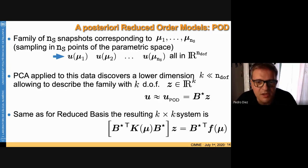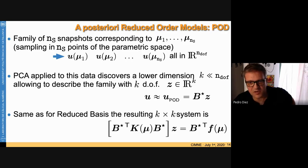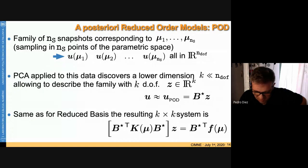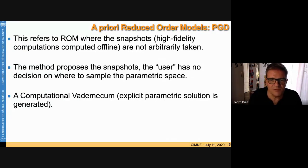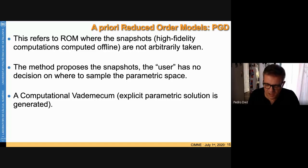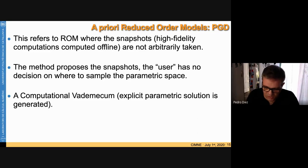Both reduced basis and POD are called a posteriori reduced order models because you must first compute snapshots arbitrarily. There is another family — a priori reduced order models — where the user does not decide where to sample the parametric space. Additionally, you do not need to solve a new problem for each new value of μ; instead you get a computation-over-the-mechanism, an explicit parametric solution.